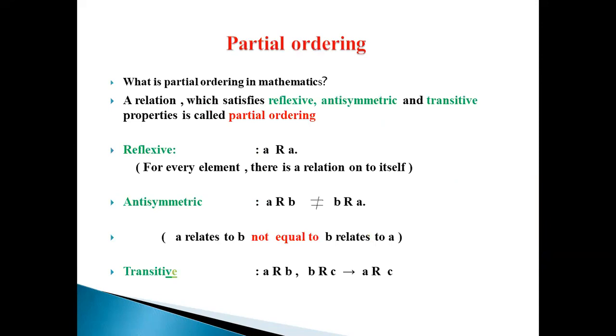So what is partial ordering? A relation which satisfies reflexive, antisymmetric, and transitive properties is called partial ordering.